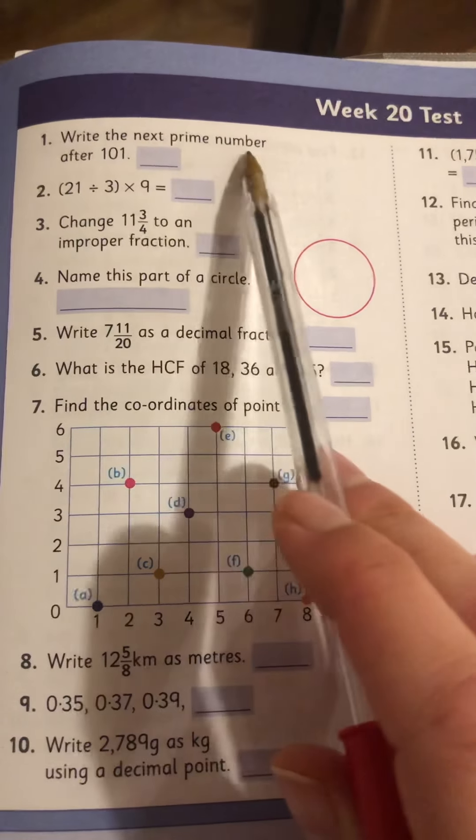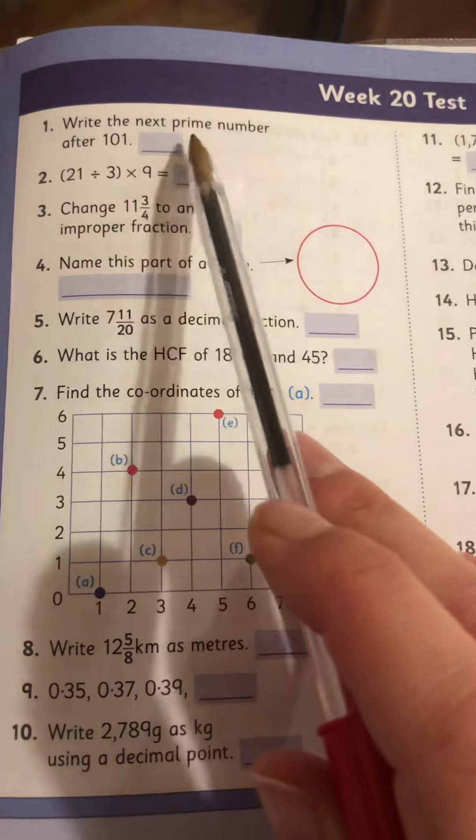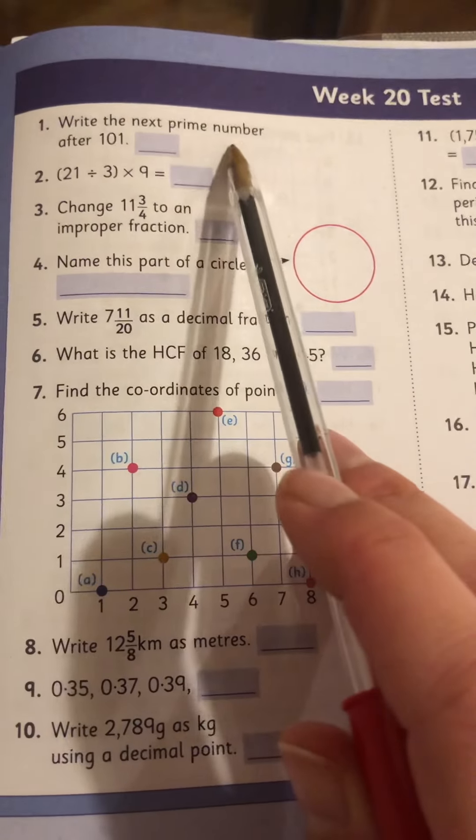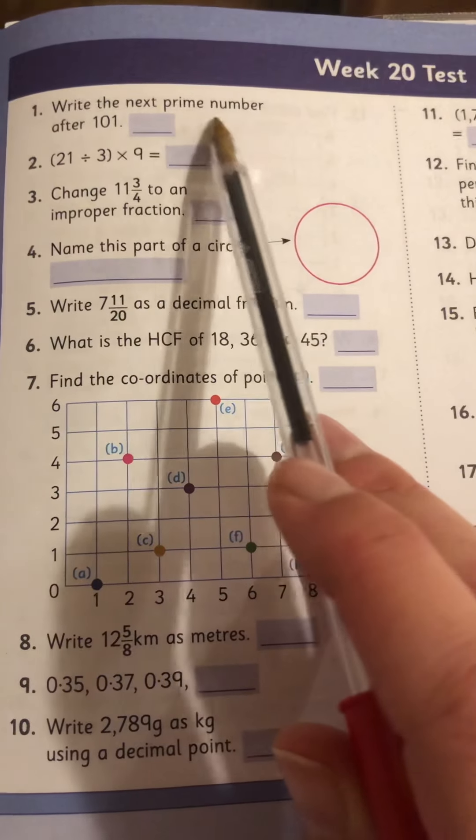So number 1, write the next prime number after 101. So prime number is any number that can only be divided by itself and 1.